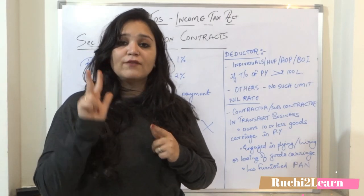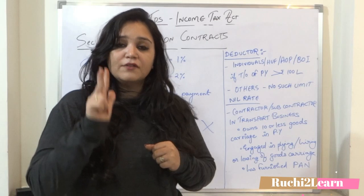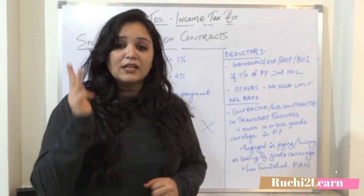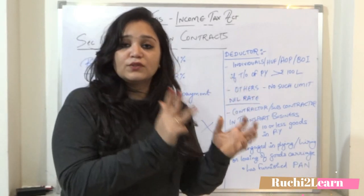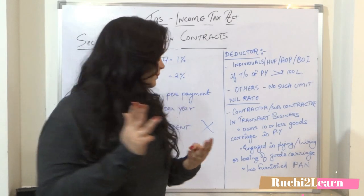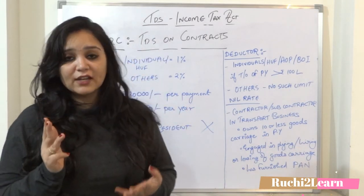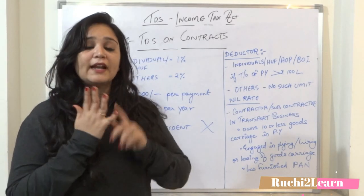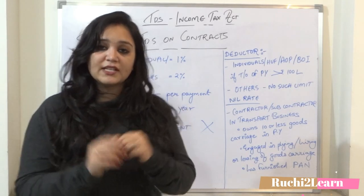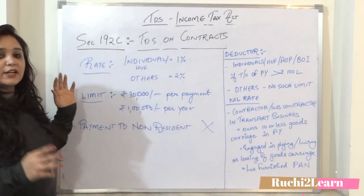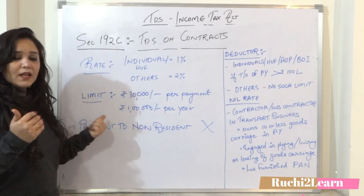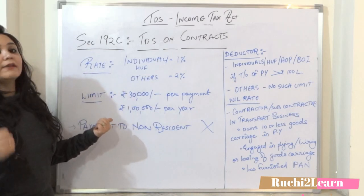To recap: you should be a contractor or subcontractor in a transportation business. You should own goods carriages — 10 or fewer. These goods carriages should be used for renting, plying, hiring, or leasing. And lastly, you must furnish PAN details. If all these conditions are satisfied, then no TDS. Otherwise, TDS at the rate of 1% or 2% as applicable, with limits of 30,000 per payment and 1 lakh per year.